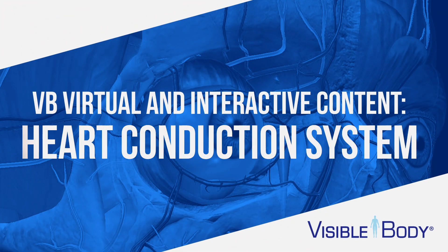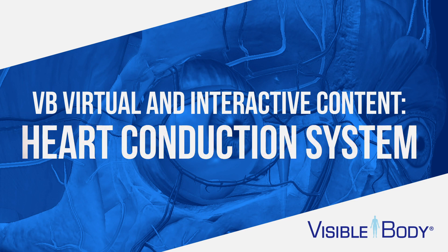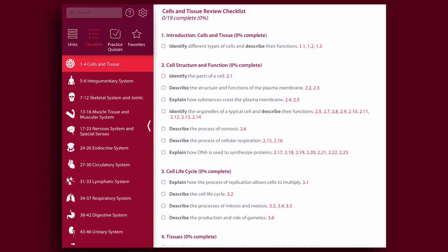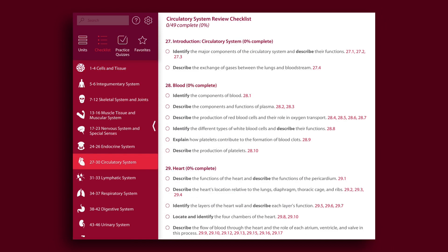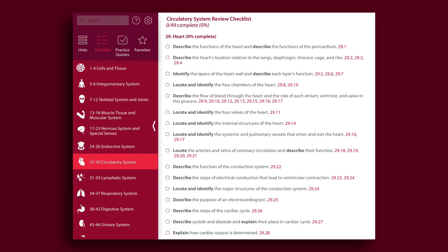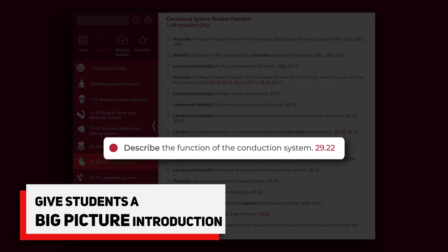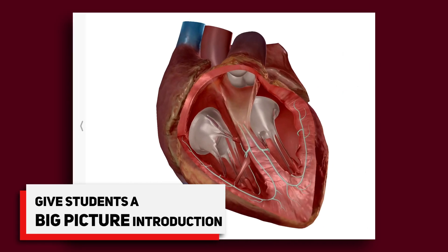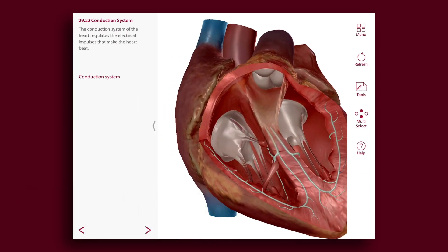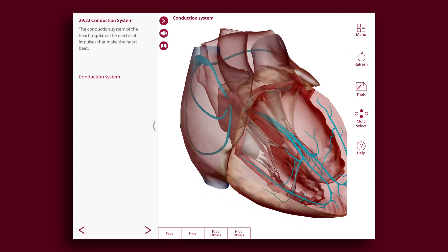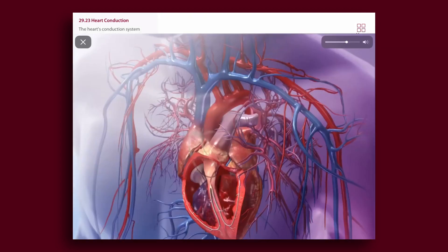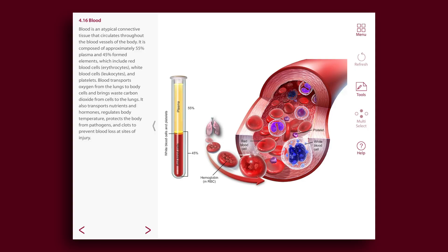If you're looking for a visual and interactive way to teach the conduction system, here's how you can do it with Visible Body. First, you can use the step-by-step walkthrough in Anatomy and Physiology to give students a big picture introduction of key concepts. Assign each learning module as homework and review it together during lecture. Modules include 3D models, animations, and detailed illustrations.